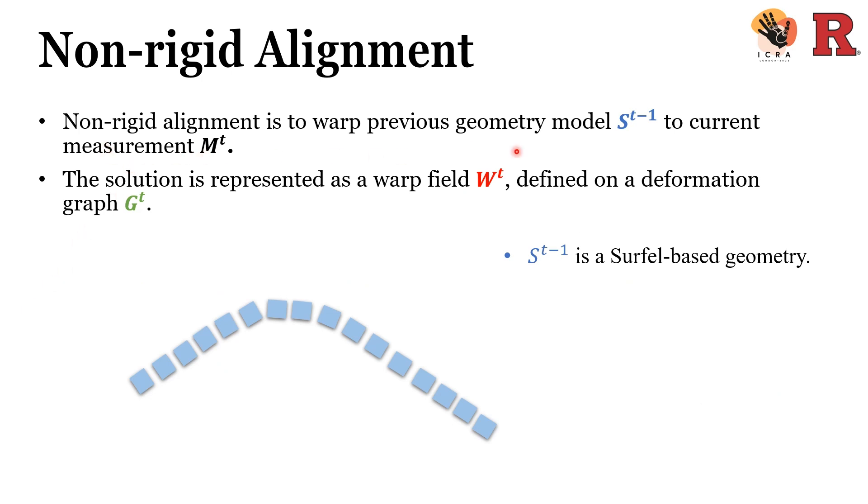The goal of non-rigid alignment is to align the previous geometry model S^(t-1) to the current measurement M^t. The solution is represented as a warp field W^t, defined on a deformation graph.